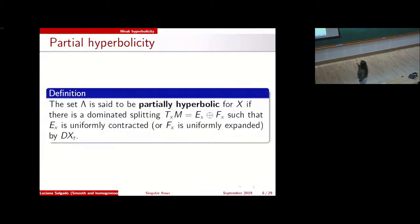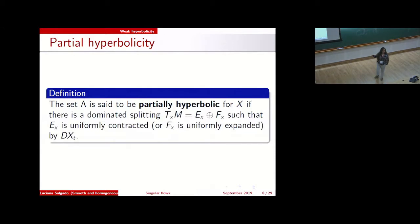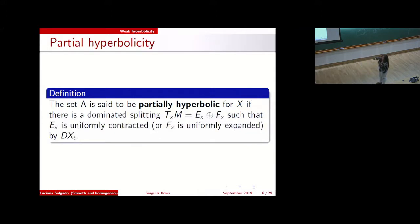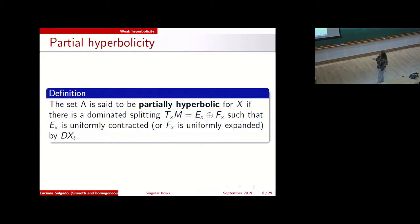Another kind of hyperbolicity weaker than uniform hyperbolicity is partial hyperbolicity. In my context, partial hyperbolicity is a dominated splitting such that one of the sub-bundles is either uniformly contracted or uniformly expanded.